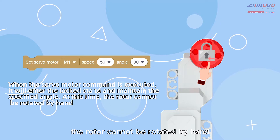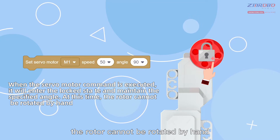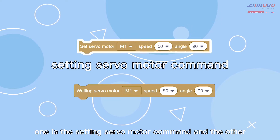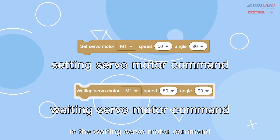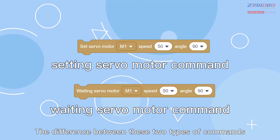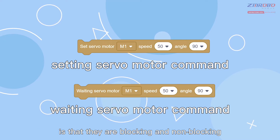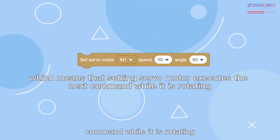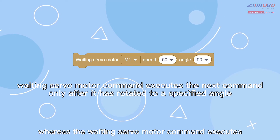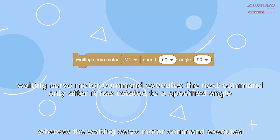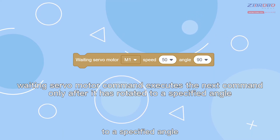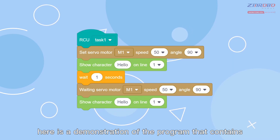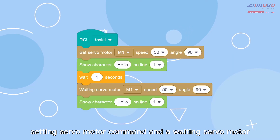There are also two types of servo motor commands: the setting servo motor command and the waiting servo motor command. The difference is that they are blocking and non-blocking. The setting servo motor executes the next command while it is still rotating, whereas the waiting servo motor command executes the next command only after it has rotated to a specified angle.